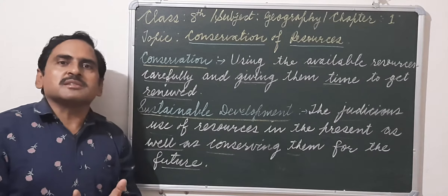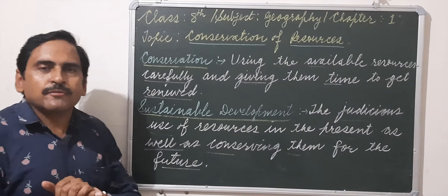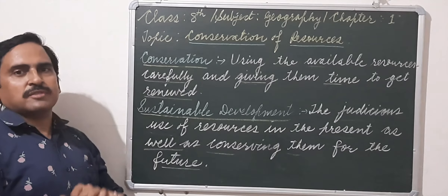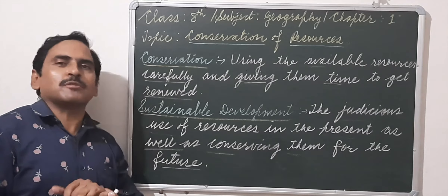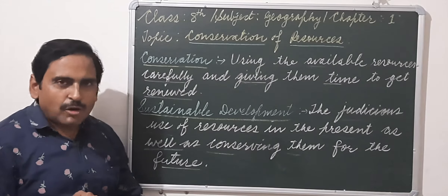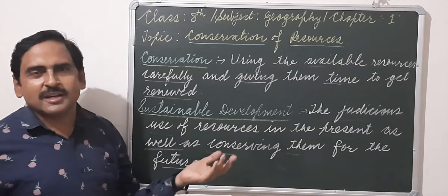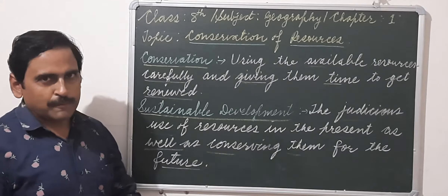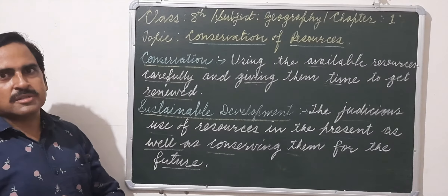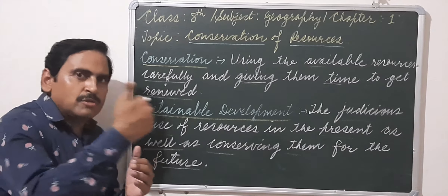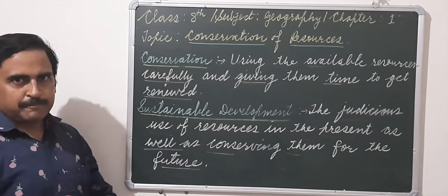We not only have to conserve non-renewable resources, we have to be careful about renewable resources as well. Trees, for example, are the best example of renewable resources. But if we start cutting trees indiscriminately, thinking that they are renewable, that is wrong. We have to limit the use of these resources so that their availability is not affected.